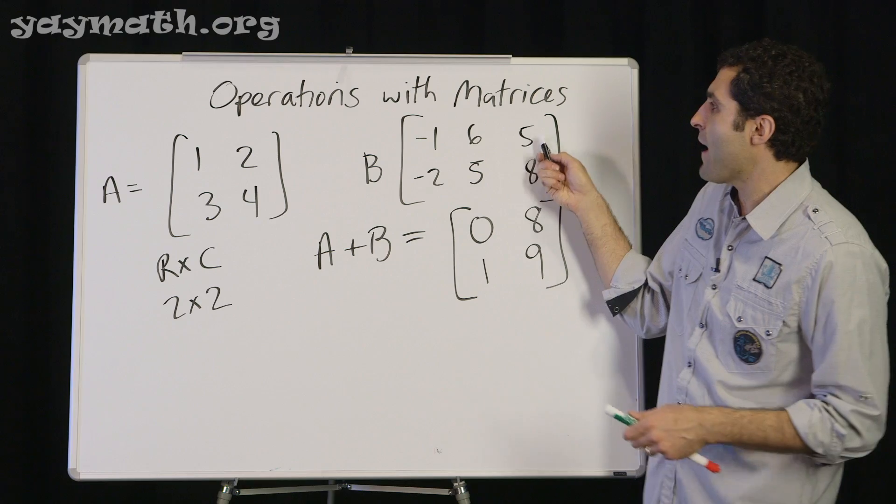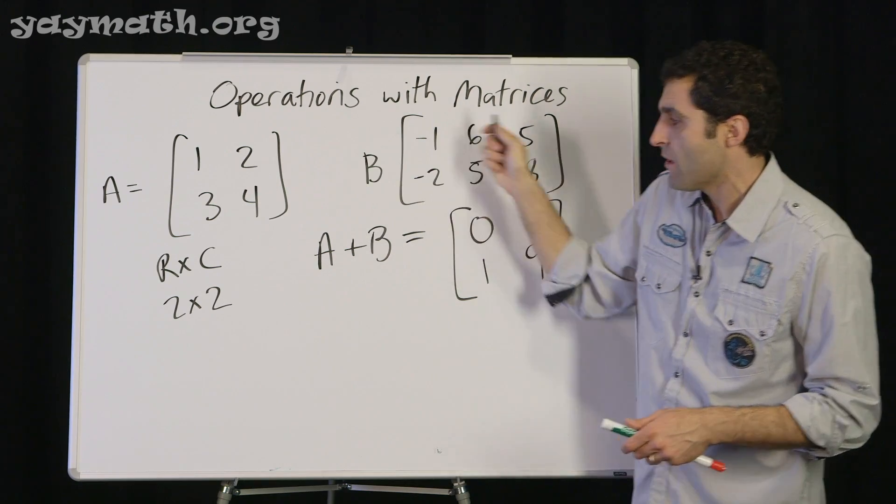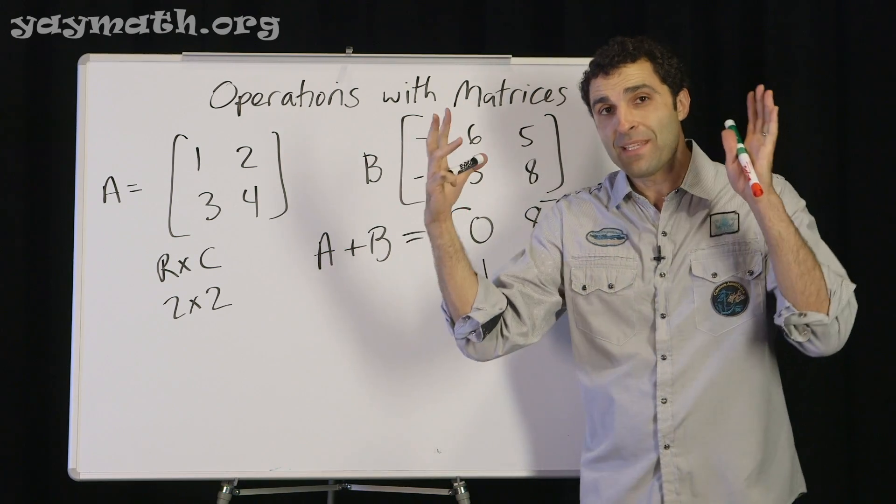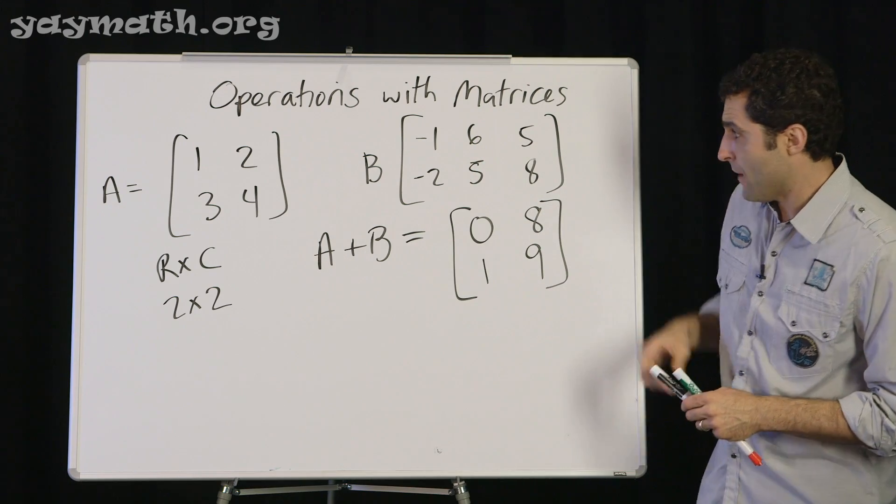Because basically the five has no pair to add to. So to add matrices, to subtract matrices, we need to have them be the same dimension. That's important.